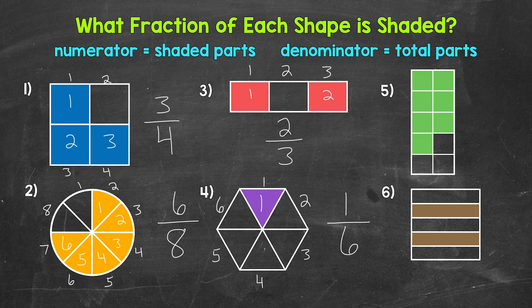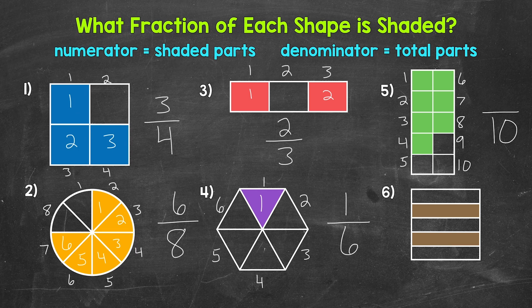Next for number five, let's see how many total equal parts the whole has been divided into. One, two, three, four, five, six, seven, eight, nine, ten. So ten is our denominator. And as far as the numerator, we have one, two, three, four, five, six, seven equal parts shaded in. So our numerator is seven. Seven out of ten parts are shaded. Our fraction is seven over ten, which we say seven tenths.